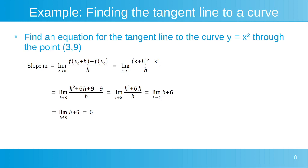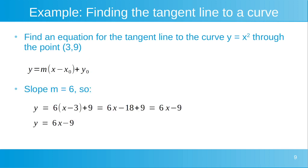We've just calculated that the slope of the curve y is equal to x squared at the point (3, 9) is equal to 6. Now we have our slope and the values of our point, so we have everything we need to substitute into the equation of the line to find the equation of the tangent line. Starting with y is equal to m into x minus x0 plus y0, we substitute in our values: slope m is equal to 6, x0 is equal to 3, and y0 is equal to 9. We get y is equal to 6 into x minus 3 plus 9, which multiplies out to 6x minus 18 plus 9, which evaluates to 6x minus 9.